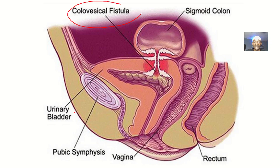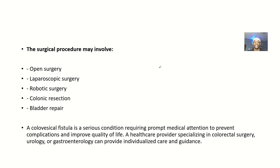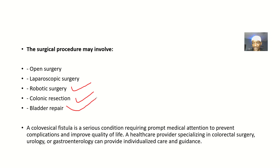This image shows the colovesical fistula — the communication between the sigmoid colon and the bladder. The surgical procedures may involve colon surgery, laparoscopic surgery, robotic surgery, colonic resection, and bladder repair.